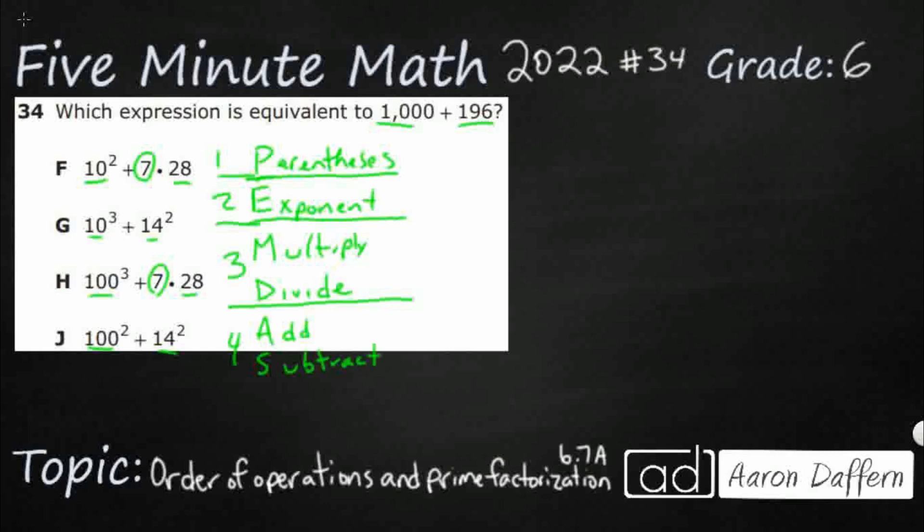So let's just look at F. I've got 10 squared plus 7 times 28. So I see an exponent, I see an addition, and I see a multiplication. Using our order of operations, we're going to take care of this exponent first. So 10 squared really just means 10 times 10, right? And then plus 7 times 28. So let's go ahead and take care of my multiplications here. I've got 10 times 10. That's 100.